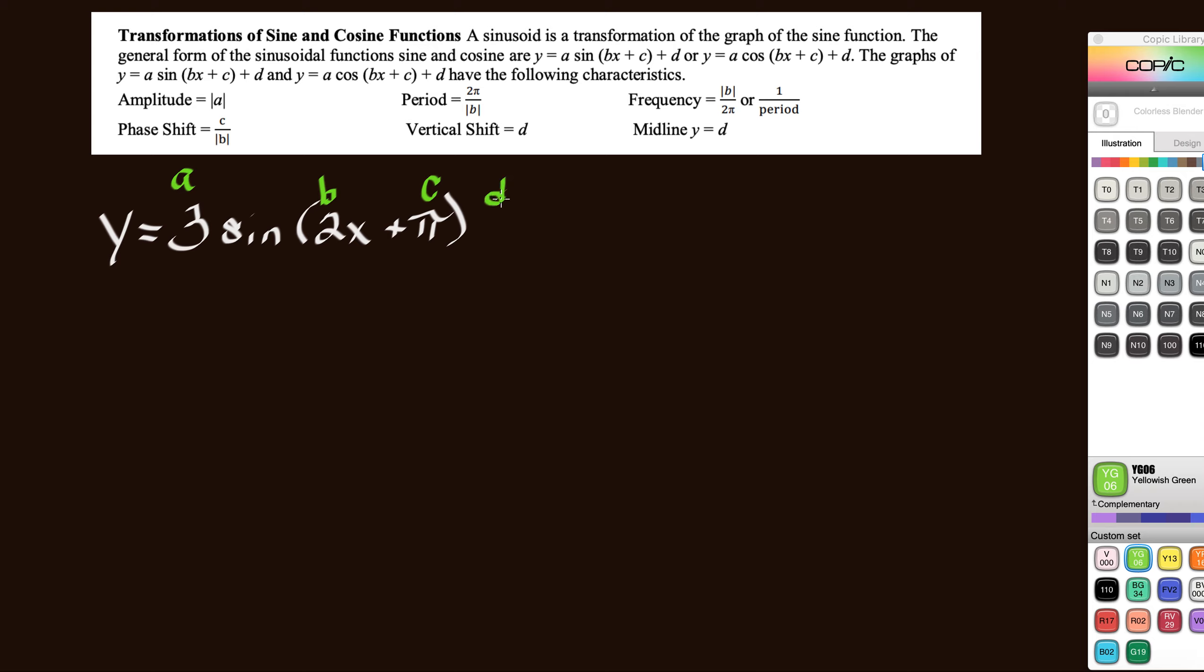But D would be out here. And so D would be plus whatever. D happens to be 0. That means that's the midpoint of the wave. Or that's where the vertical shift is. Because it hasn't shifted up or down at all.